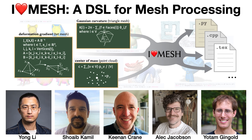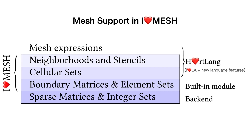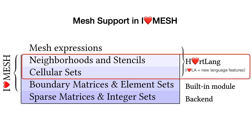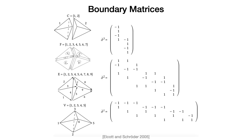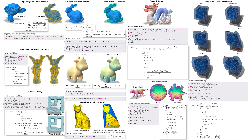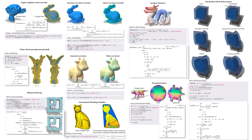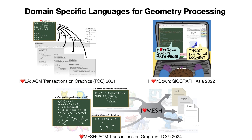My third work is AhathaMesh, a DSL designed for mesh processing which resembles notation commonly used in visual and geometric computing, automating the process of converting notation into code. The centerpiece of our language is a flexible notation for specifying and manipulating neighborhoods of a cell complex, internally represented via standard operations on sparse boundary matrices. We can rapidly implement various algorithms on point clouds, surface meshes, and volume meshes. In conclusion, the three tools I've built make the whole process from writing the paper to implementing the formula easier.